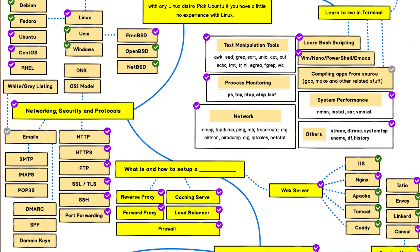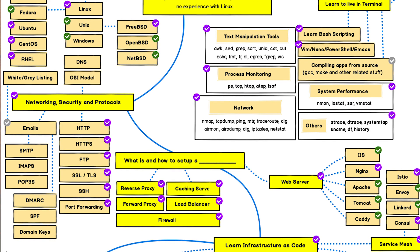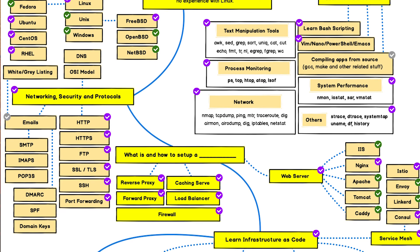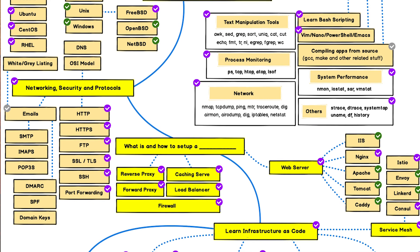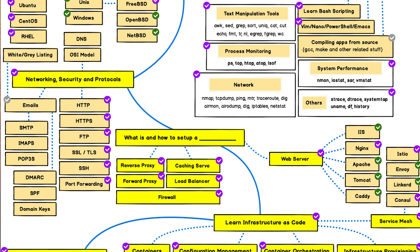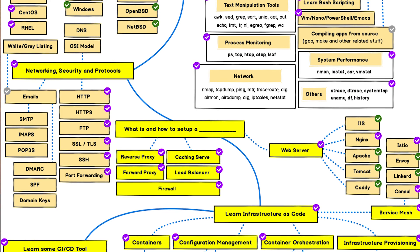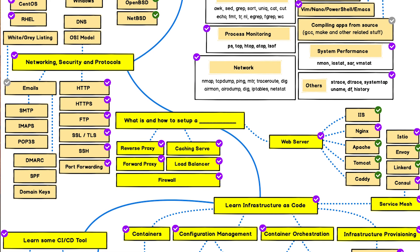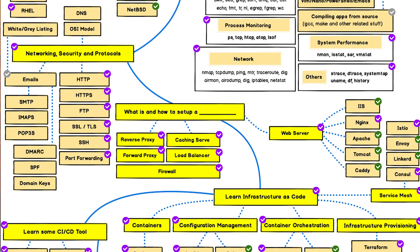Teams should know about networking, security, and protocols like HTTP, HTTPS, SSL, TLS, SSH, FTP, SMTP, and IMAP. They should know what web servers are and how to set up servers like Apache, Nginx, Tomcat, and IIS. Knowledge of how to set up reverse proxies, load balancers, and firewalls is a must.